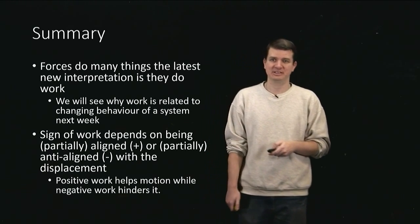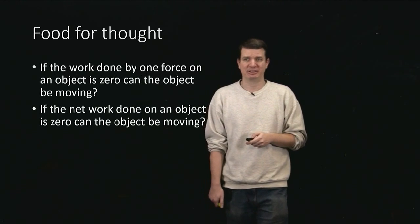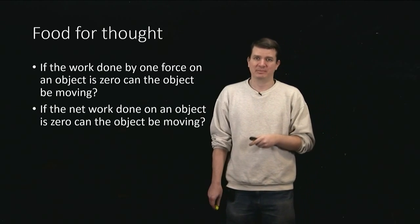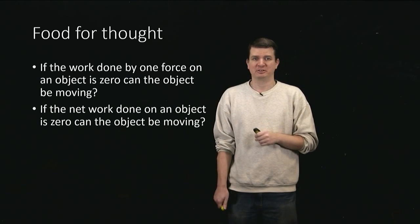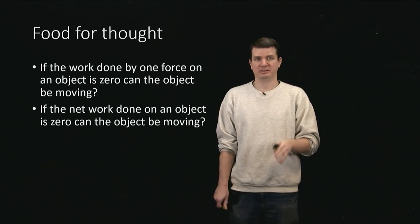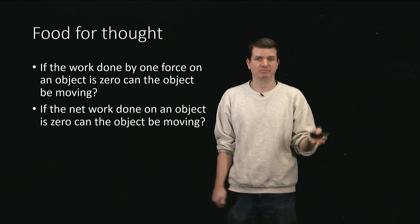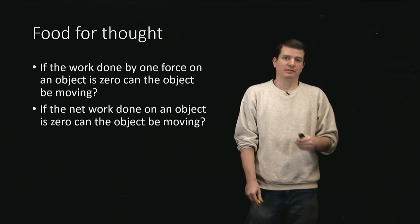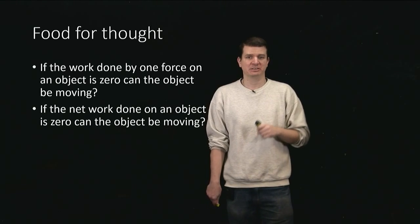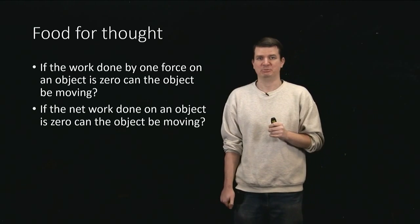To make sure that this video has actually been helpful and you're understanding what's going on, try and think about these questions. So suppose that the work done by one force out of potentially many acting on an object is zero. Could the object be moving? Now a slightly more complicated question. If the net work done on an object is zero, can the object be moving?